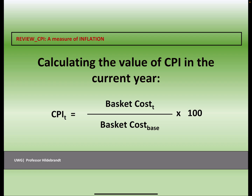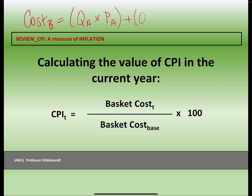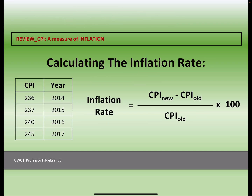Make sure you're comfortable with this formula. You're going to calculate the cost of the basket in the current year and divide that by the cost of the basket in the base year. The cost of the basket is calculated based on spending habits of the population: for each good in your basket, you take the quantity of that good — quantity of good A times the price of good A — and add to that the quantity of good B times the price of good B, and so on.